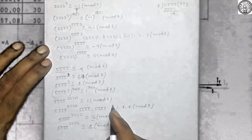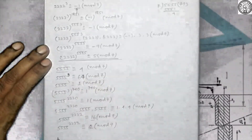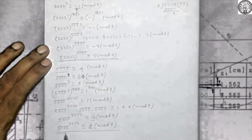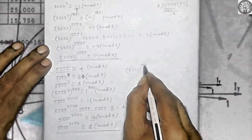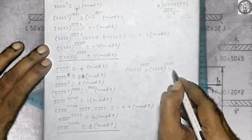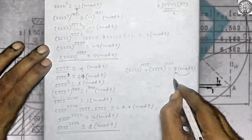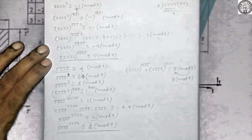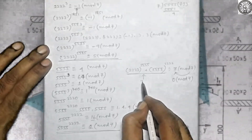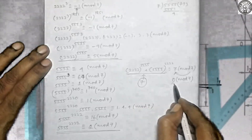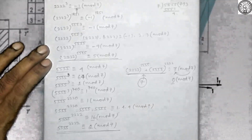Therefore, we got that √2 to the power √5 is congruent to 5 modulo 7, and √5 to the power √2 is 2 modulo 7. Now if I add the corresponding sides, we are going to have 7 modulo 7. So 7 will be reduced, giving 0 modulo 7. That is, when this expression is divided by 7, the remainder is 0. It means this expression is completely divisible by 7.